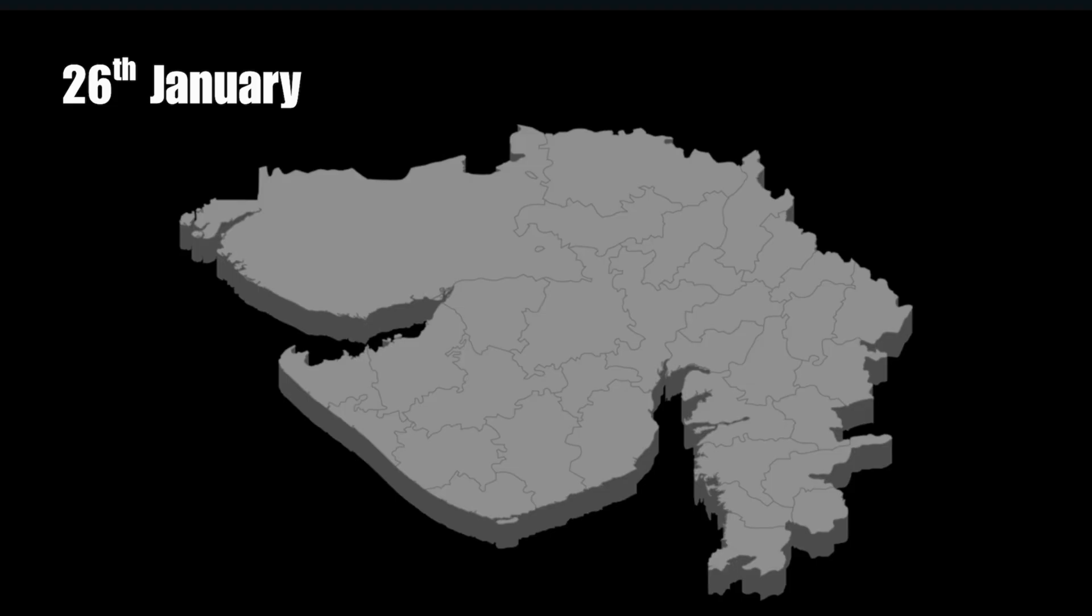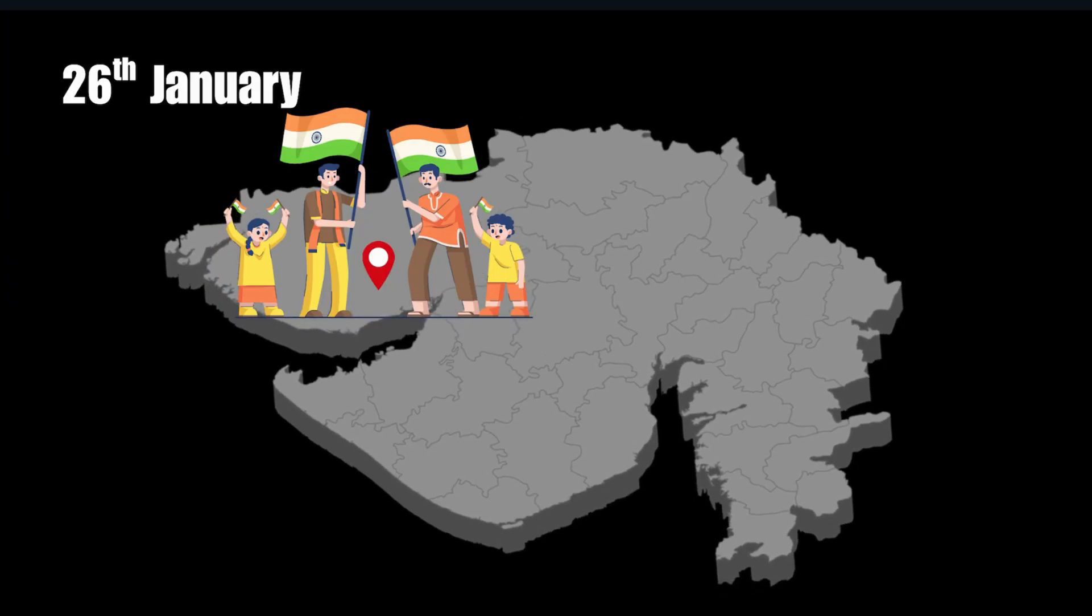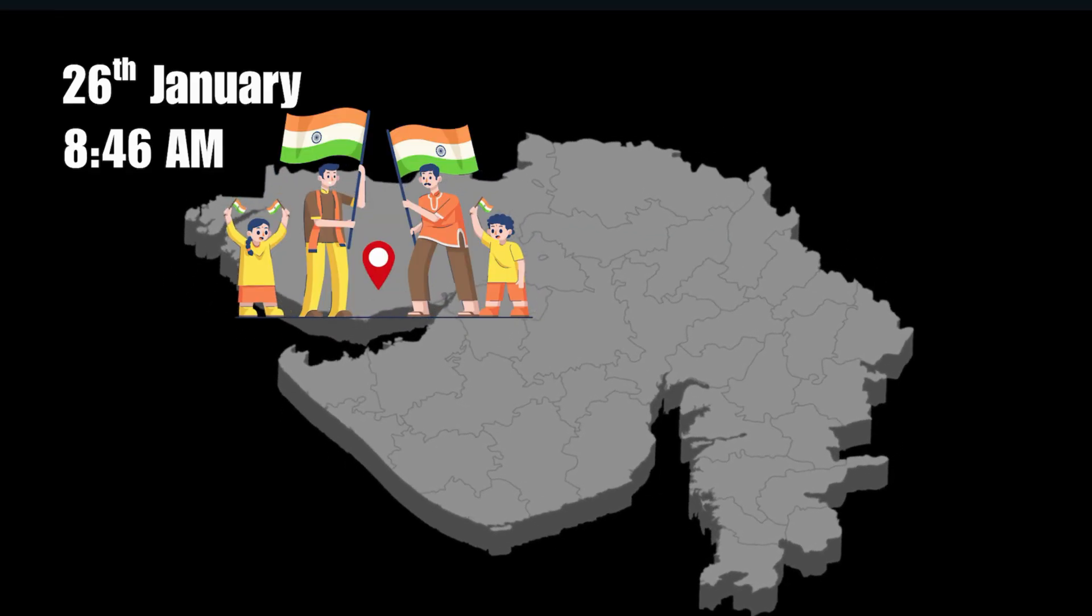It was a Republic Day morning in Gujarat. Children were getting ready for parades, flags were being raised and the air was filled with cheer. But at 8:46 AM, the earth decided to march too, with a deadly force.